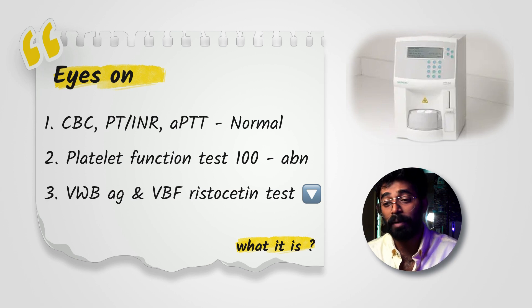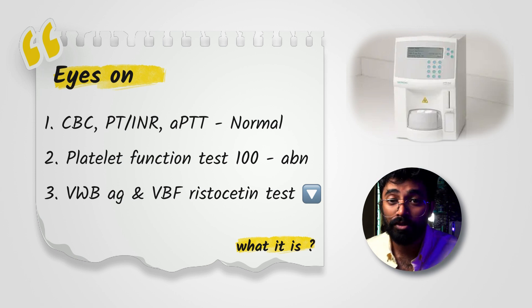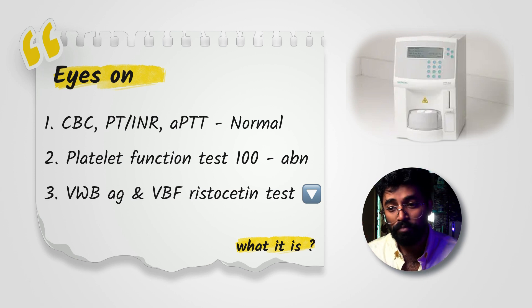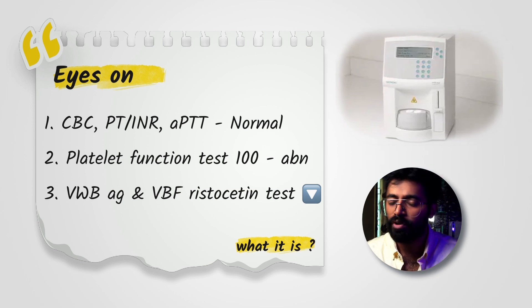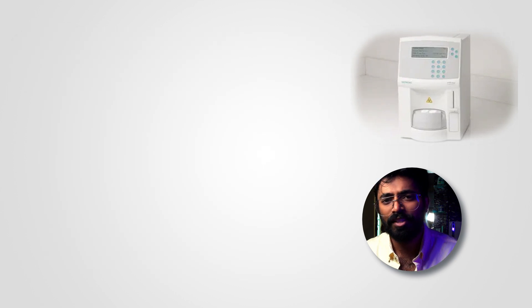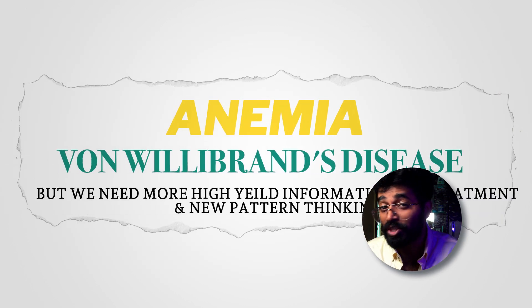The platelet function test also helps in differentiating Glanzmann's thrombasthenia. Remember that point as well. Von Willebrand factor antigen levels have been tested and are reduced, so von Willebrand disease is the confirmed diagnosis. But we need to focus on the new points that can be examined.